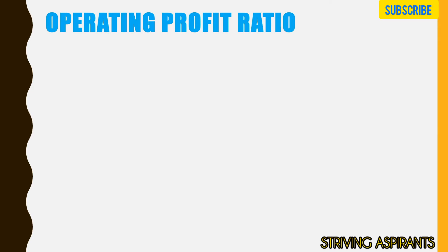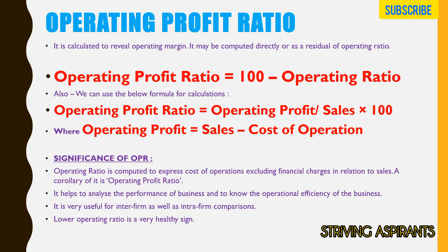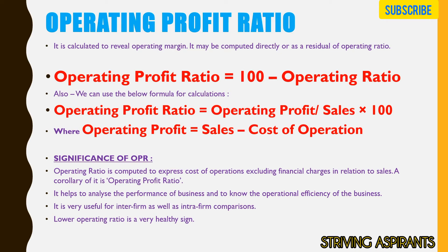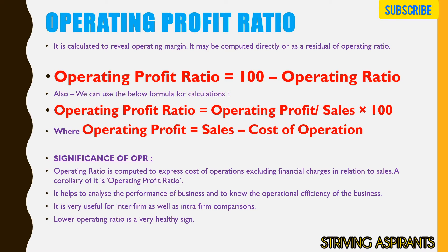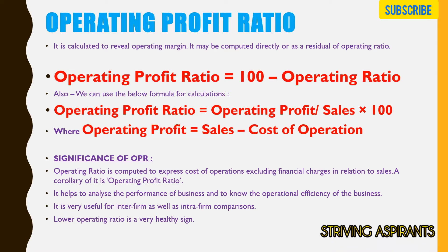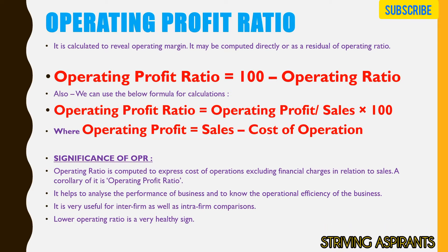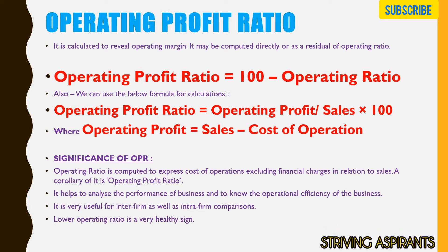The main intention of the operating ratio is to calculate the operational cost in relation to sales. Next is the operating profit ratio, which equals 100 minus operating ratio, or alternatively: Operating Profit divided by Sales multiplied by 100, where Operating Profit equals Sales minus Cost of Operation. This ratio is computed to express cost of operations excluding financial charges in relation to sales, and helps analyze business performance and operational efficiency.